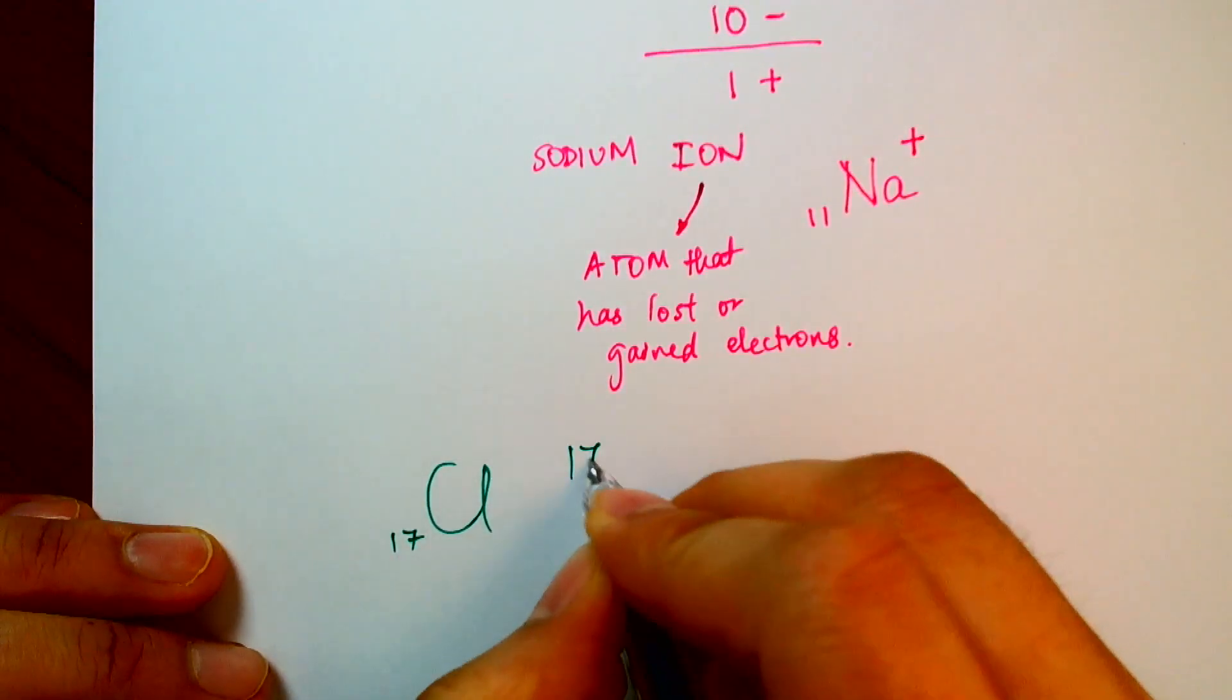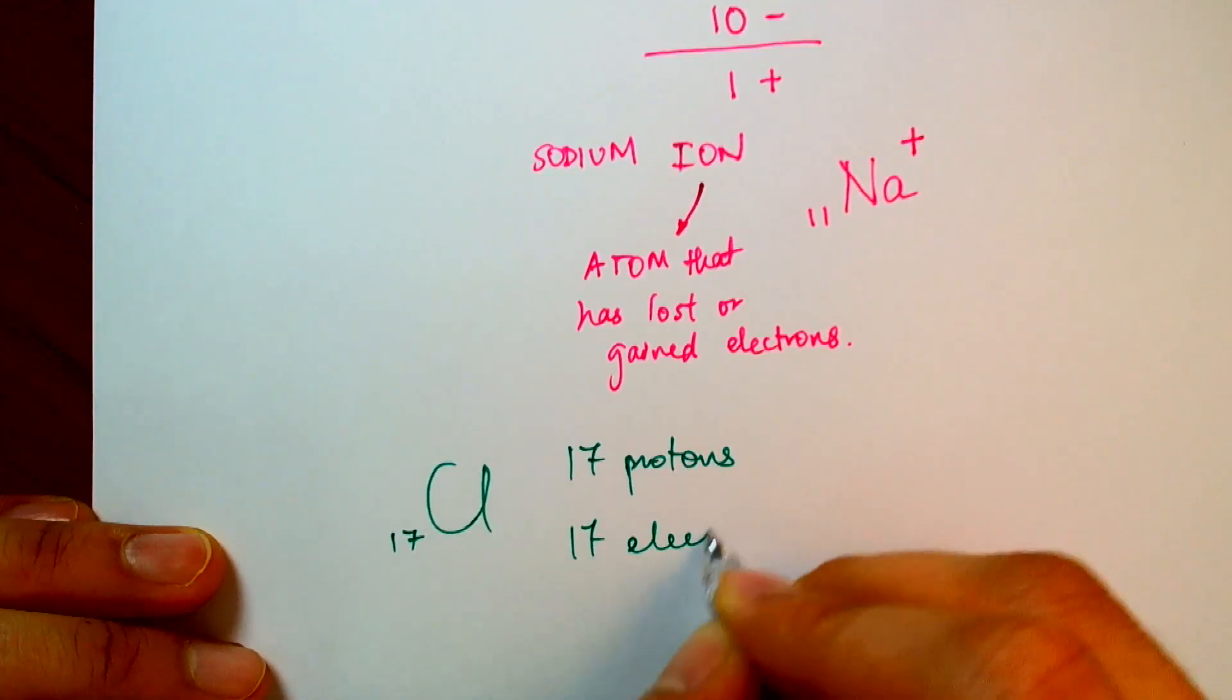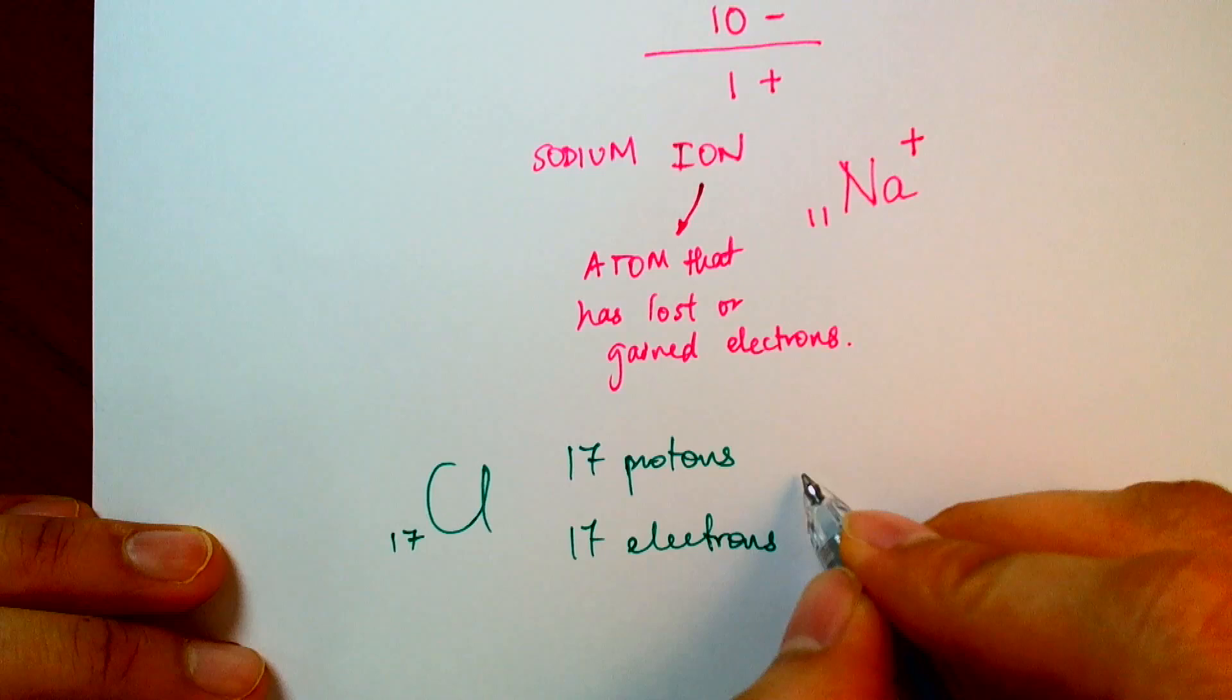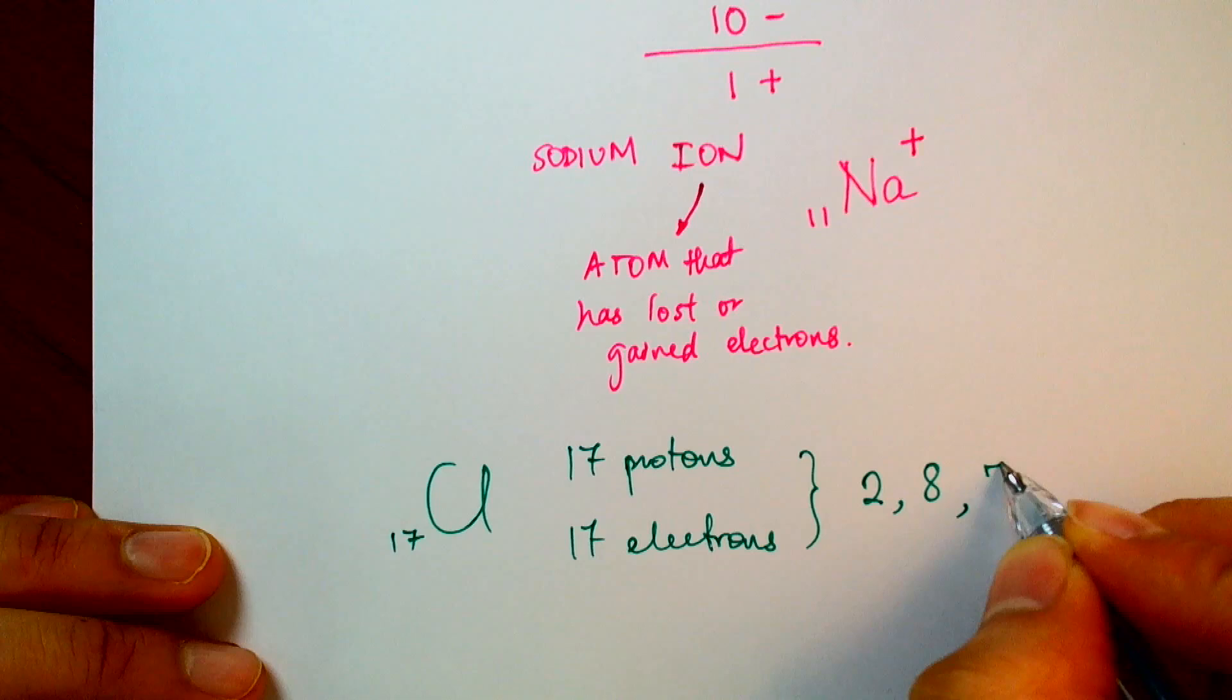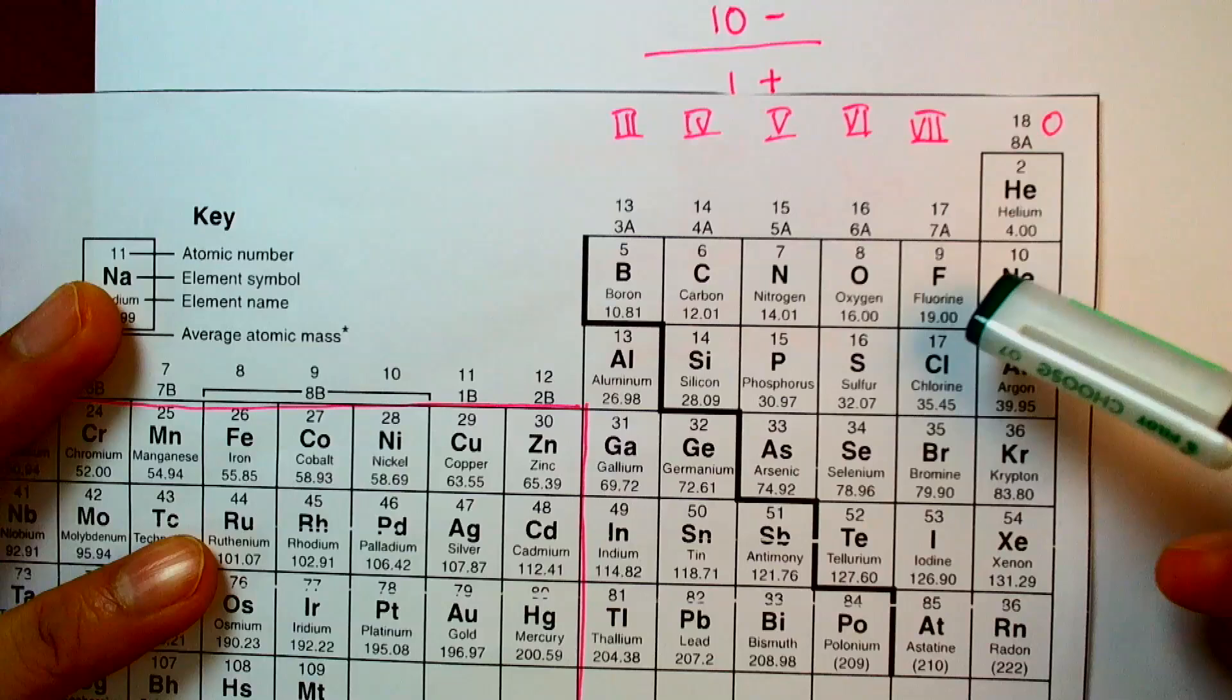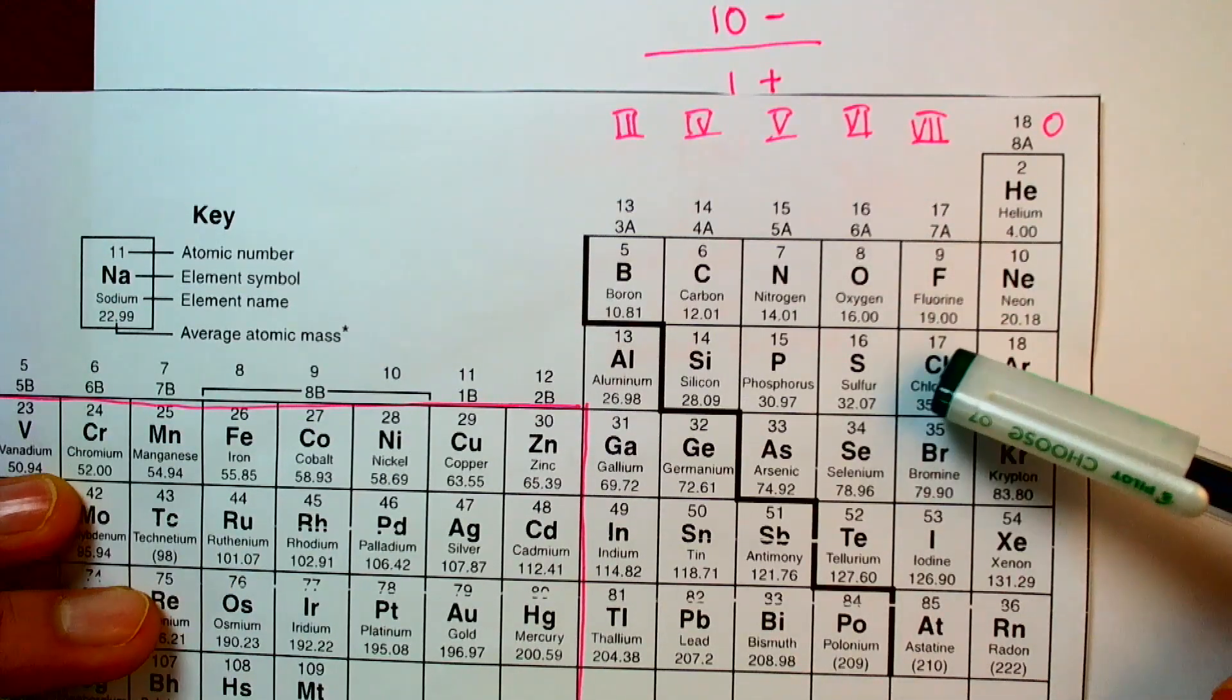So chlorine has 17 protons, 17 electrons, and we can start filling their shells. So I'm going to need 2 in the bottom level, 8. 2 and 8 is 10 that leaves 7. And all 7 can go in the third shell. And indeed, as we see here, chlorine is in group number 7. So it has 7 electrons in the outer shell.